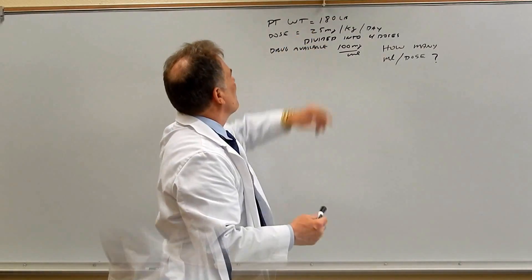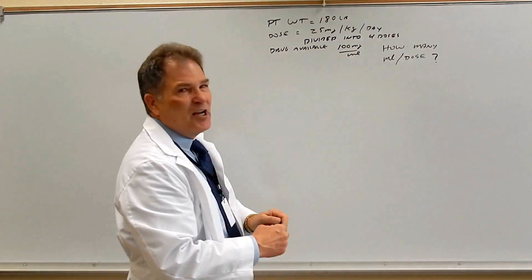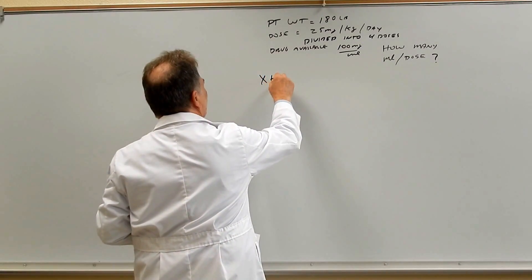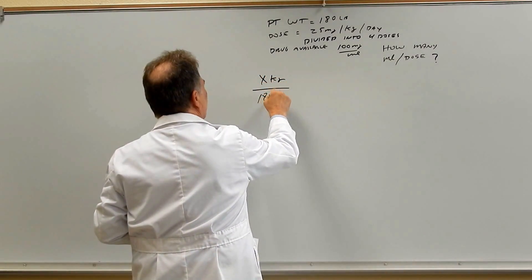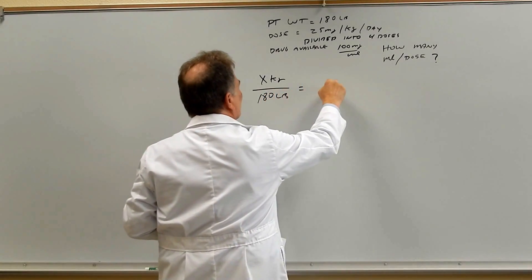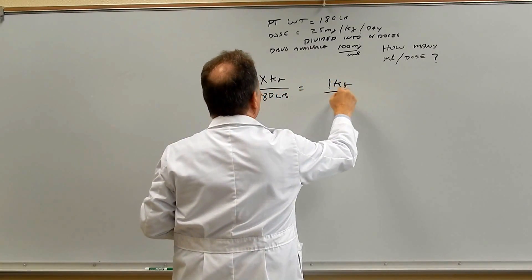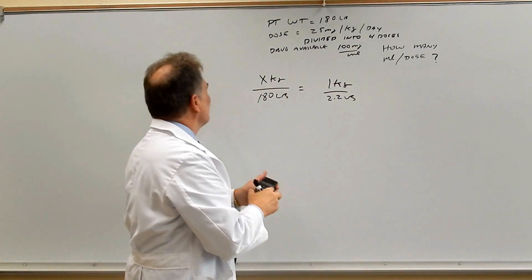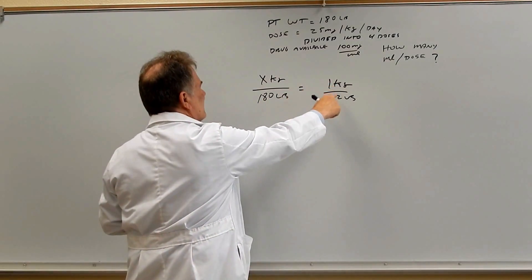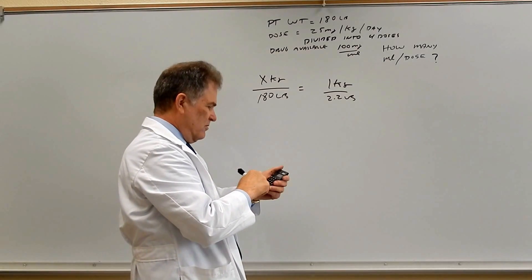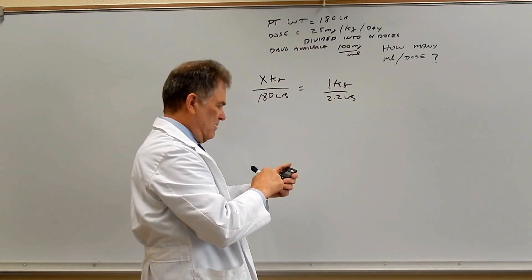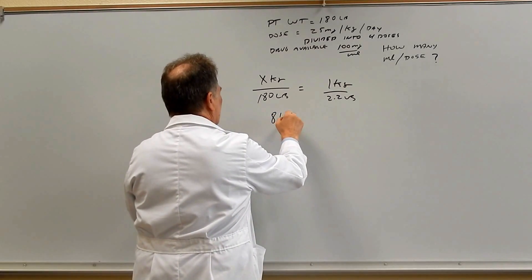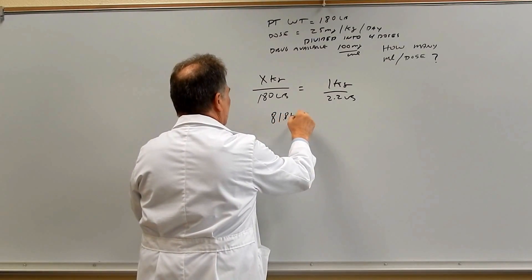Now the other way is using ratio proportion. First we have to change 180 pounds into kilograms: x kilograms over 180 pounds equals 1 kilogram over 2.2 pounds. Solving that, he weighs 81.8 kilograms.